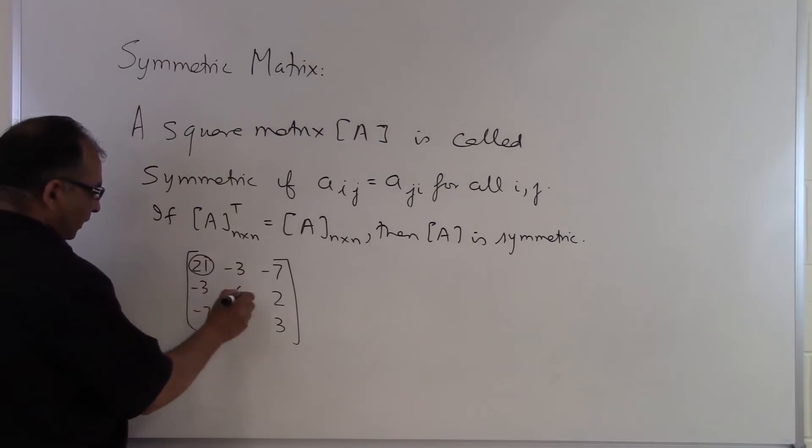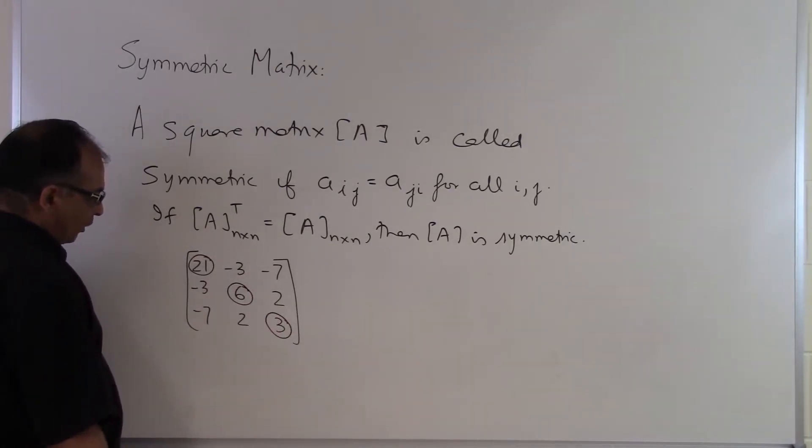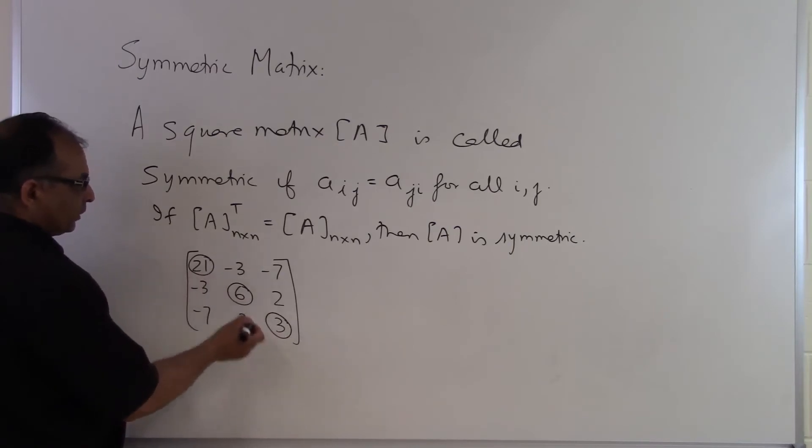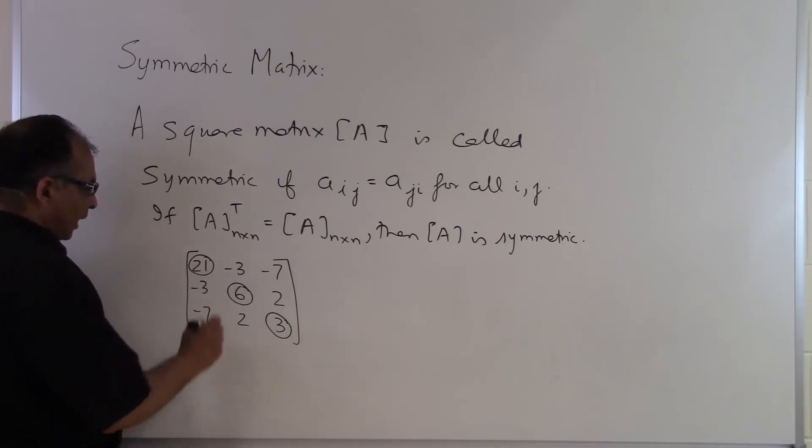Now we don't have to worry about the diagonal elements because the row number and the column number is the same for each of these diagonal elements, so those are going to be equal anyway. So if I switch the row number and column number of 21, it is still the first row first column, so there's no need to check that, but I need to check the elements which are not on the diagonal.